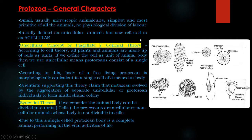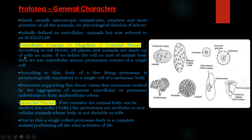There is no physiological division of labour. They were initially defined as unicellular animals but now referred to as acellular. Regarding whether they are acellular or unicellular, there are two theories. The first is the unicellular concept or flagellate colonial theory, which is based on cell theory given by Schwann and Schleiden — that all plants and animals are made up of cells. If we define the cell as a unit of animal body, then protozoans consist of a single cell. According to this, the body of a free-living protozoan is morphologically equivalent to a single cell of a metazoan body.